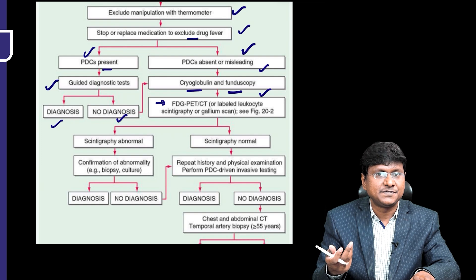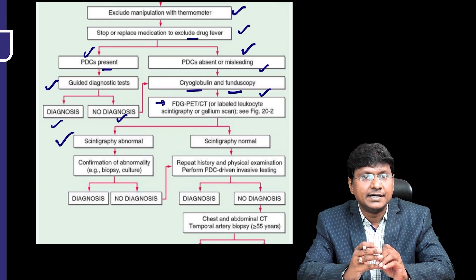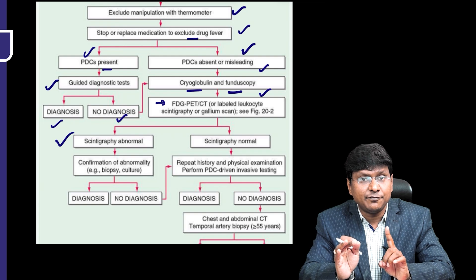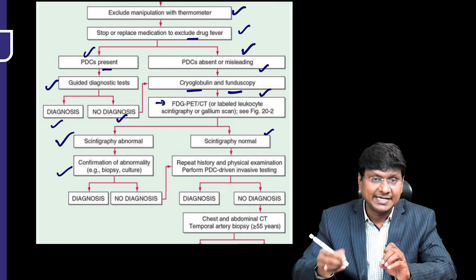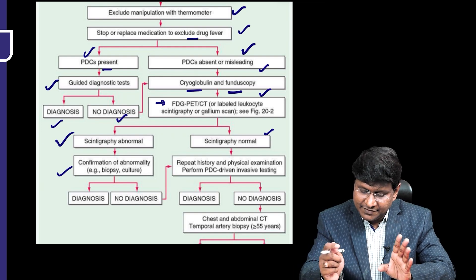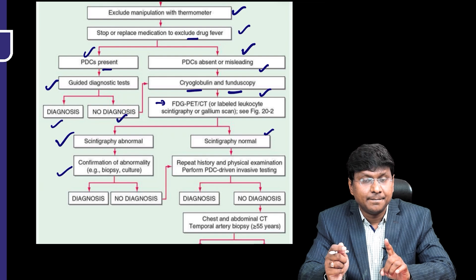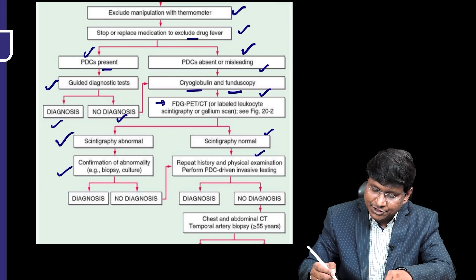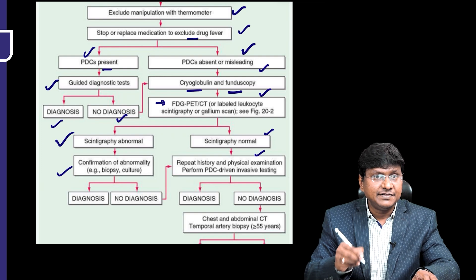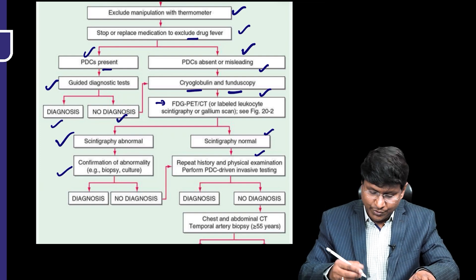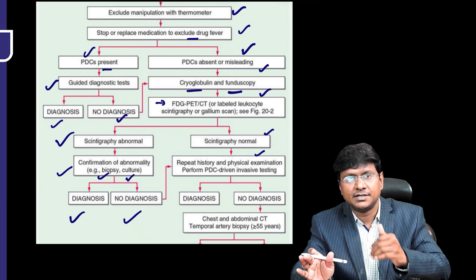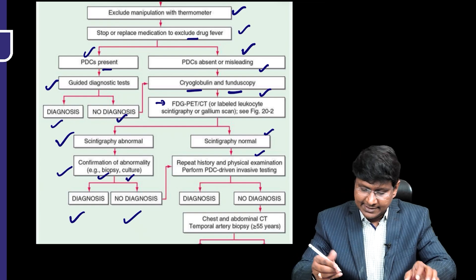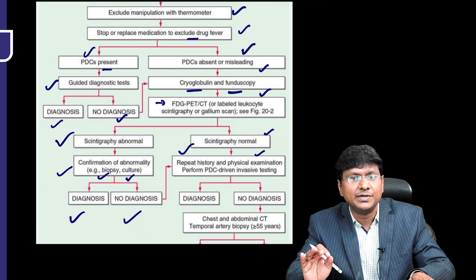Then comes advanced imaging and biopsies based on findings. If scintigraphy is abnormal, you need to perform a biopsy or culture of the identified abnormality. If the diagnosis is confirmed, treat accordingly. If no diagnosis is reached, then continue with further investigations.